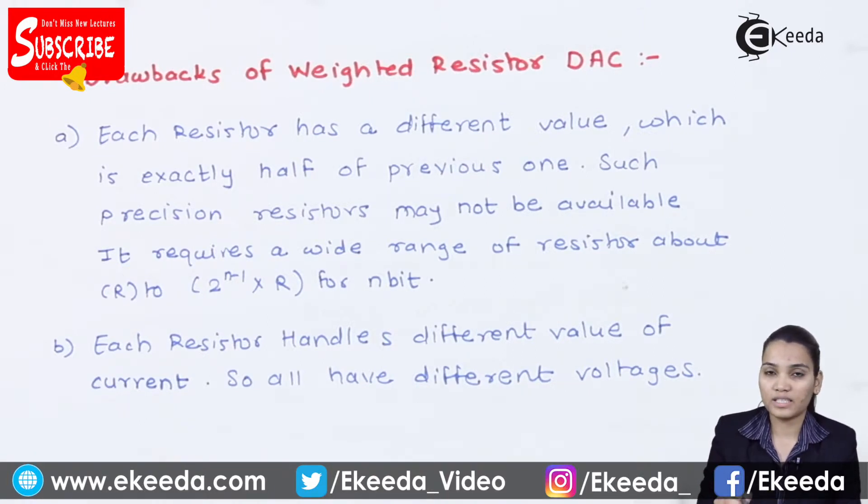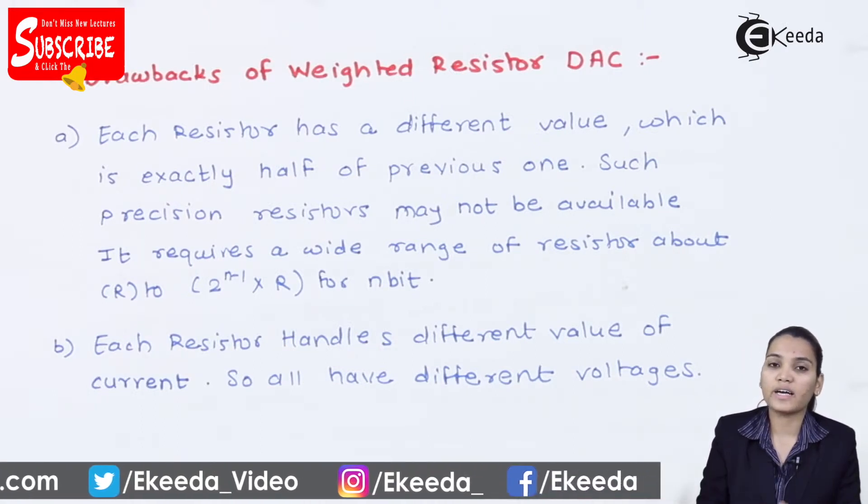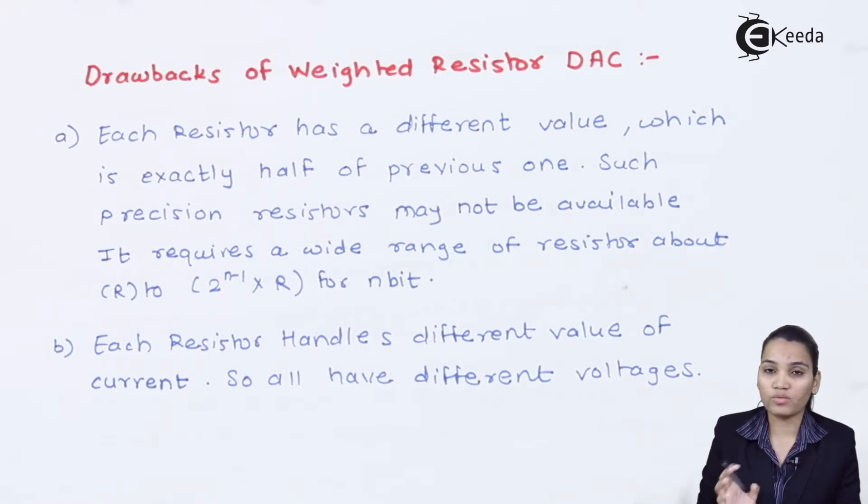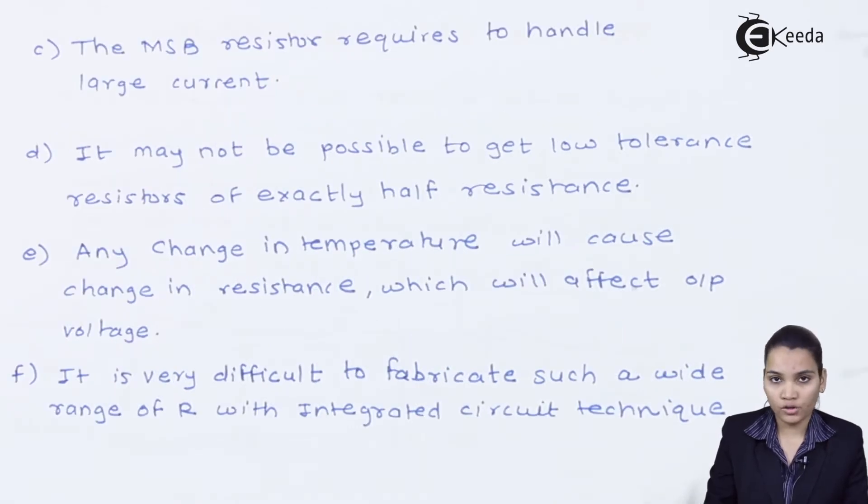For example, there is a resistance at the value R. The current passing through resistor R is very large, and the current passing through resistor 8R will be very low. Therefore, both values will have different voltage levels at each input stage. Now another drawback is the MSB resistor has to handle a very large current. Because of this, the circuit might be getting damaged, so it is very required to balance the circuit.